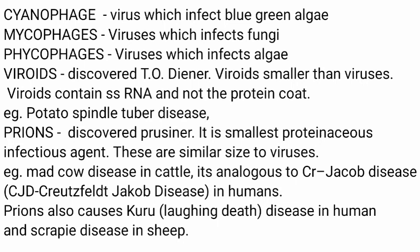Prions were discovered by Prusiner. Prions are the smallest proteinaceous infectious agents. Examples of prion diseases include Mad Cow disease in cattle, Creutzfeldt-Jakob disease (CJD) in humans, and also laughing death disease in humans and scrapie disease in sheep.